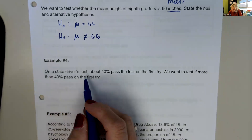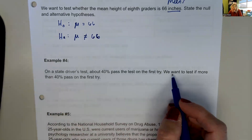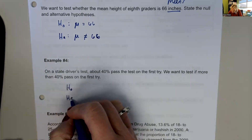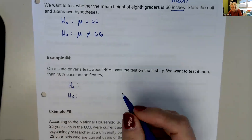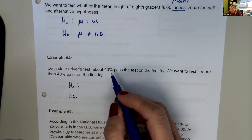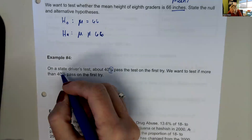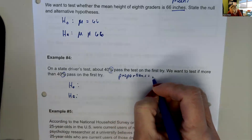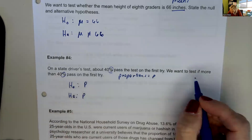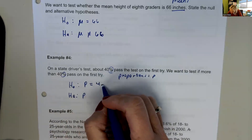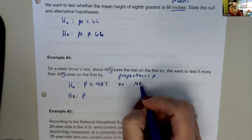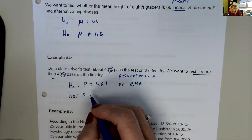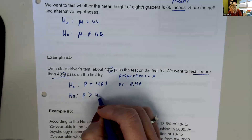Example four: on a state driver's test, about 40% pass the test on the first try. We want to test if more than 40% pass on the first try. We see percentages, so we're talking about proportions — symbol P. H0: P equals 40%, or 0.40. And H_A: P is greater than 40%, since they want to see if more than 40% pass.